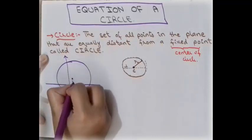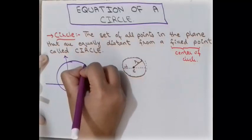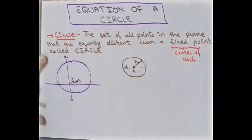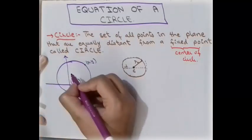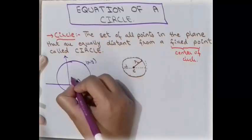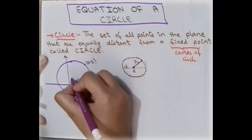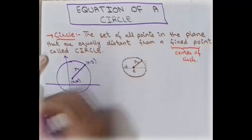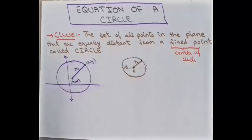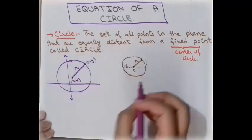Suppose we have a circle in a plane. Here is the center of the circle with coordinates (h, k), and here is a point on the circle with coordinates (x, y). The distance from the center to any point on the circle is called the radius. To find the equation of the circle, we need the distance formula between two points.